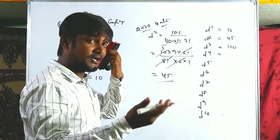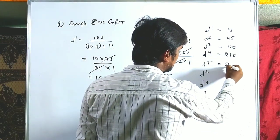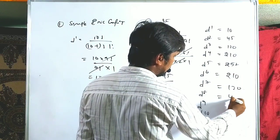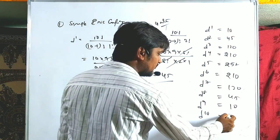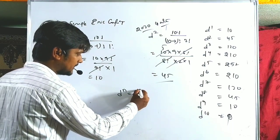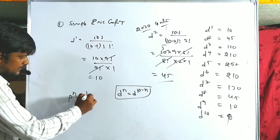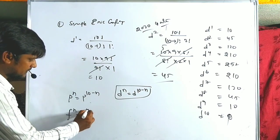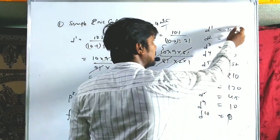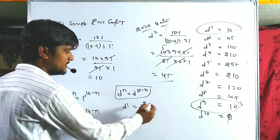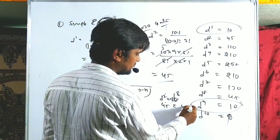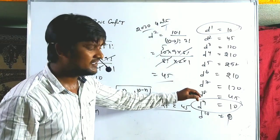The full table: D1=10, D2=45, D3=120, D4=210, D5=252, and from D6 onward the values mirror back: D6=210, D7=120, D8=45, D9=10, D10=1. The symmetry formula is: Dn = D(10−n) for d orbitals, Pn = P(6−n) for p orbitals, and Fn = F(14−n) for f orbitals.